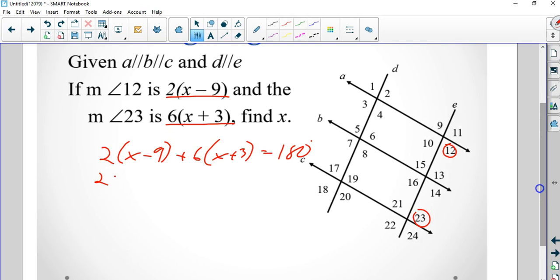Now I distribute the 2. I get 2x minus 18 plus 6x plus 18. Oh, that's nice because the 18 is going to cancel out. I just get 8x equal to 180, which is a very nice division problem. I get x is 10.